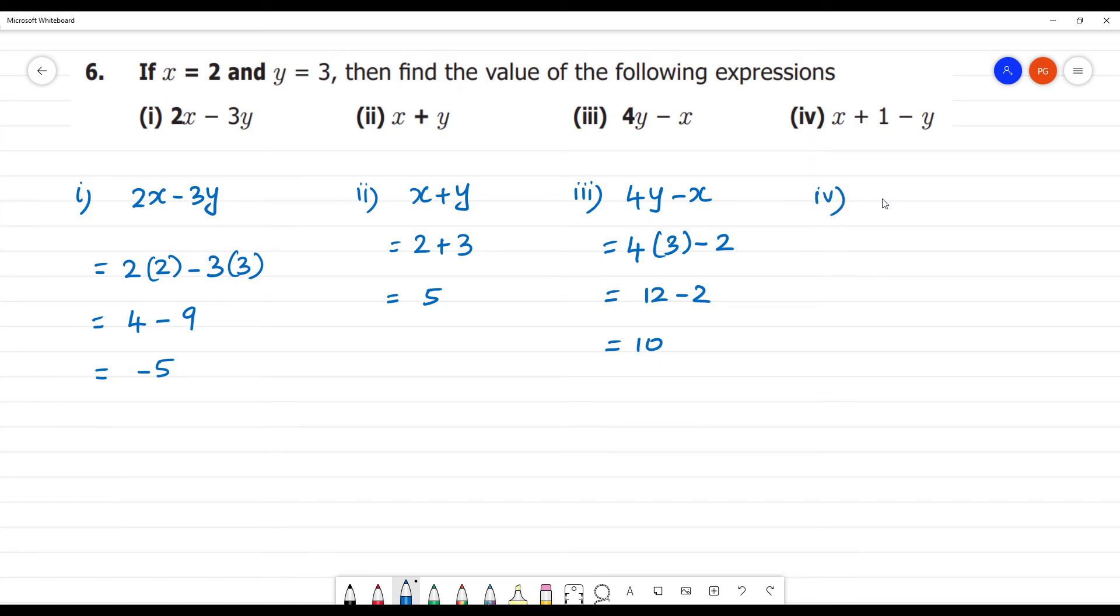Next, fourth one. x plus 1 minus y. x has the value 2, plus 1 minus y has the value 3. So, 3 minus 3, that is equal to 0.